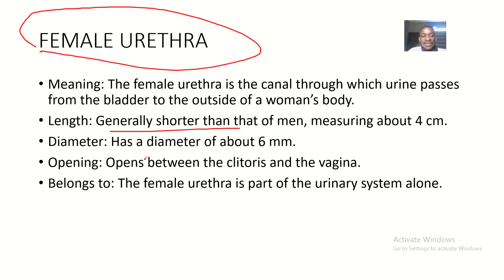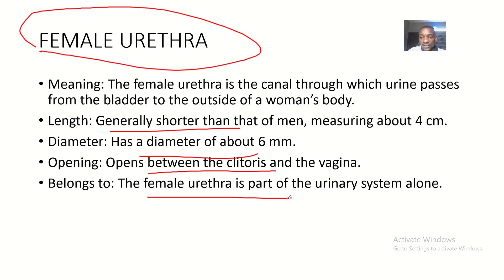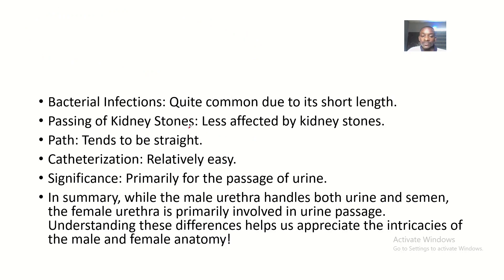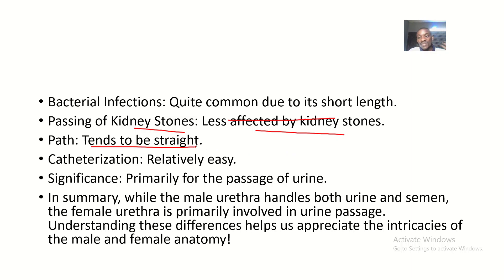The diameter of the female urethra is about six millimeters. It opens between the clitoris and the vagina. The female urethra belongs only to the urinary system. Bacterial infections are quite common because the urethra is short, so any infection can easily move into the body. Passing of kidney stones is less affected because the female urethra is wider and shorter.